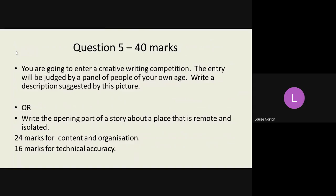So, then finally, question five. Now, this is the writing section. As you can see, it is worth 40 marks. You are given two questions. You are going to enter a creative writing competition. The entry will be judged by a panel of people of your own age. Write a description suggested by this picture. So, a piece of descriptive writing or a piece of narrative writing. Write the opening part of a story about a place that is remote and isolated.